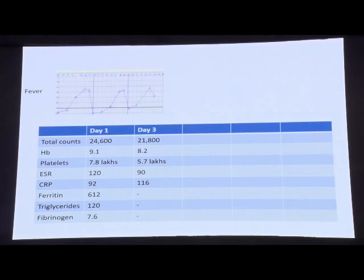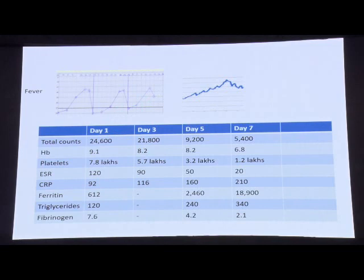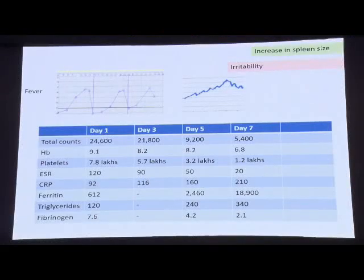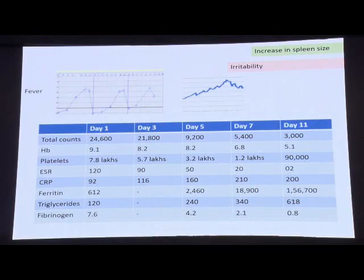The first three days he had a quotidian type of fever, but from day 5 to day 7, total counts and platelet counts started falling, ESR gradually declined, CRP spiked, and ferritin levels rose to 2,460 then 18,900. Triglycerides rose to 240 then 340, and fibrinogen dropped from 4.2 to 2.1. Importantly, the quotidian fever pattern changed to a continuous pattern from day 5, and the child subsequently developed irritability and increased spleen size.